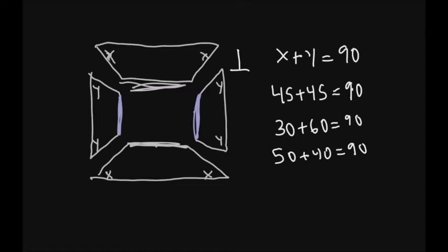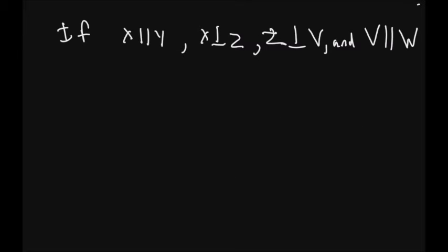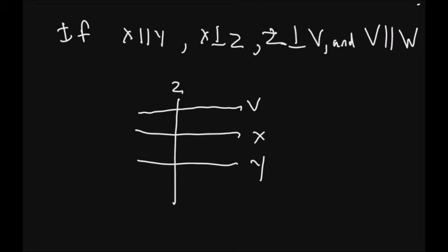One more example. So we're just going to take each part of this and draw it out. If X and Y are parallel, I'm going to start with two lines—they're parallel—call them X and Y because that's what it told us. X is perpendicular to Z, so I need a perpendicular line to X and we label it Z. And then it says Z is perpendicular to V, so I have to have another line that's perpendicular to Z called V. And then V is parallel to W, so I need one more line parallel to V, which is W. So in this case, Z is perpendicular to all of those lines.